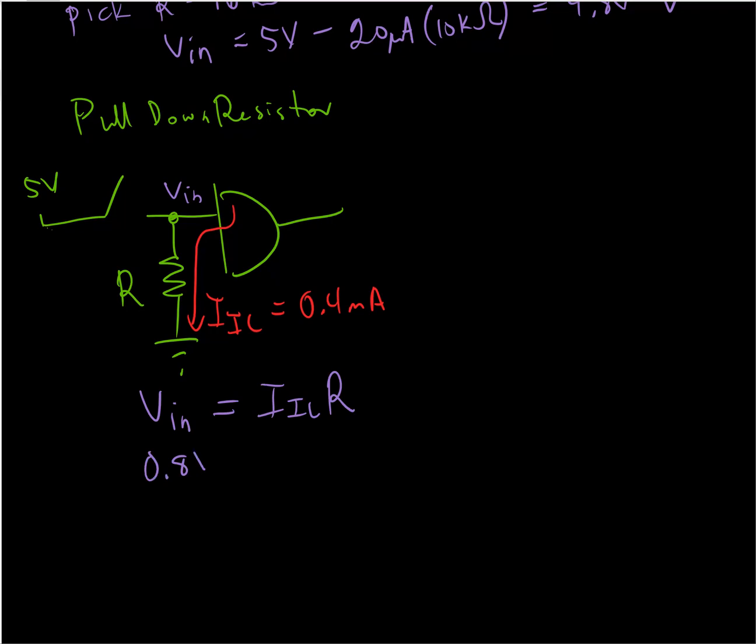IIL is 0.4 milliamps, so I'm going to solve for R and I'm going to get R equals 2 kiloohms. Now again, this is a max and this gives Vin equal to 0.8 volts, but that's right on the limit. So it's better if I pick a smaller resistance so that I'm more in the middle of the range of what is considered low.